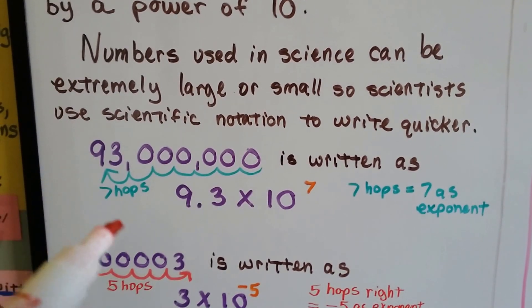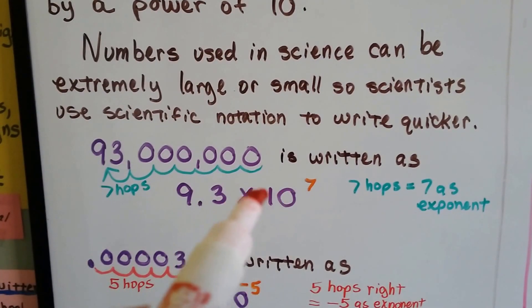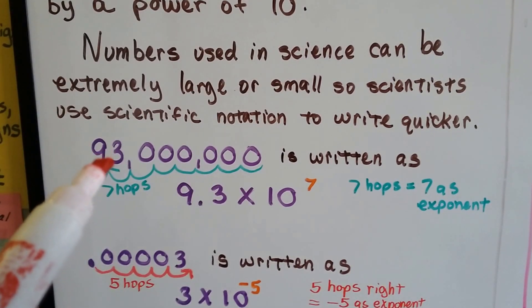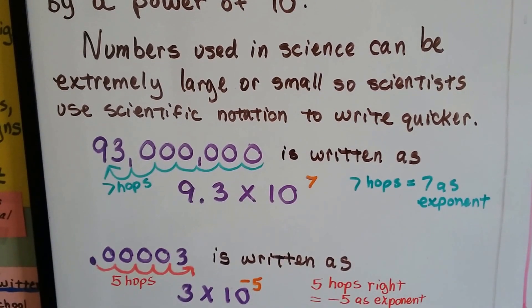93 million can be written as 9.3 times 10 to the 7th. There's 7 hops to get between this 9 and this 3, and that's what gives us our 7 for an exponent.